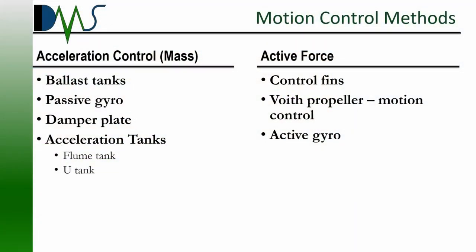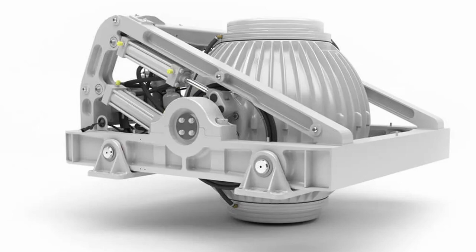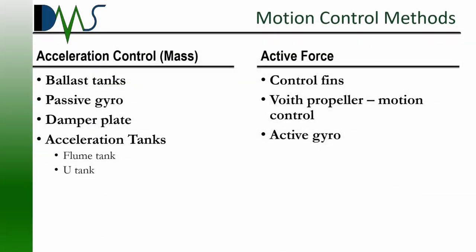I also mentioned passive gyros on the mass side. There are also active gyros where we have a spinning mass and we're actually changing the orientation of that mass to provide a reaction component. So these are all sorts of different elements for motion control and they all have different cost components.